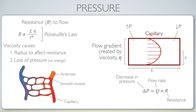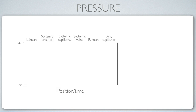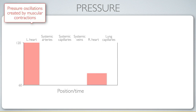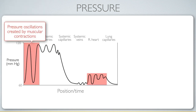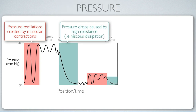Let's return to our graph of pressure as a function of position over the body. In the heart, these regions of high pressure are generated by muscular contractions, producing large pressure oscillations. Then we have the drop-offs in pressure that occur in the capillaries, because of the high resistance caused by viscous dissipation — a loss of energy. As soon as that energized fluid gets pushed through the really small vessels, viscosity acts on it and causes the drop in pressure.